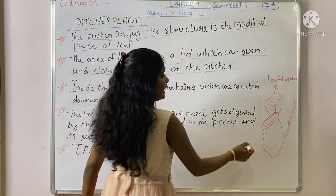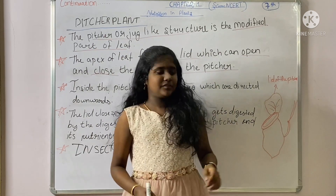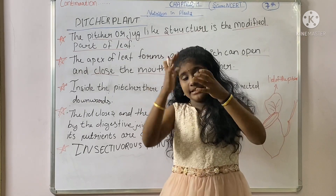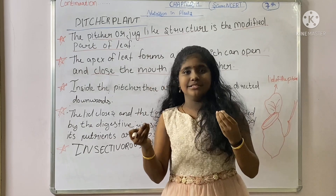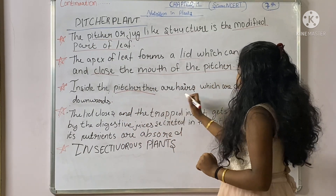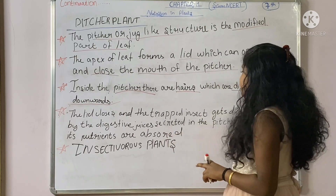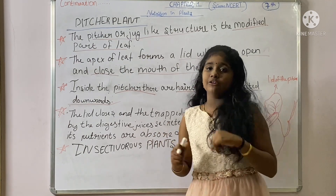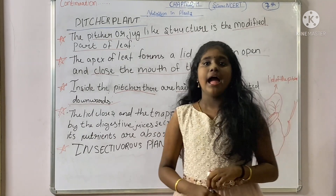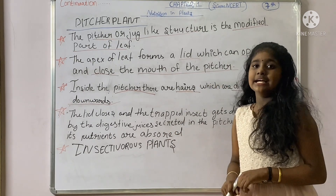Inside the pitcher, there are hairs which are directed downwards — not upwards, but downwards. The lid closes, and the trapped insect gets entangled in the hairs. Digestive juices are secreted inside the pitcher, and the insect's nutrients are absorbed.